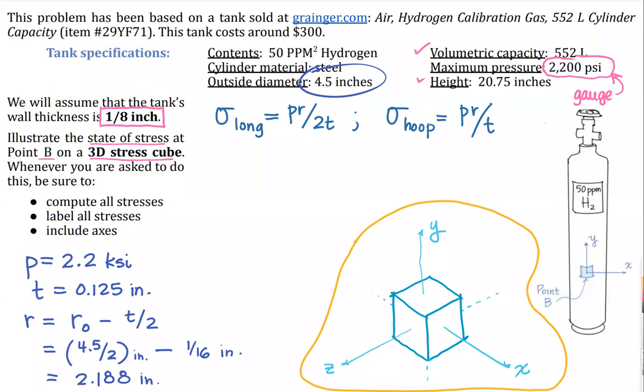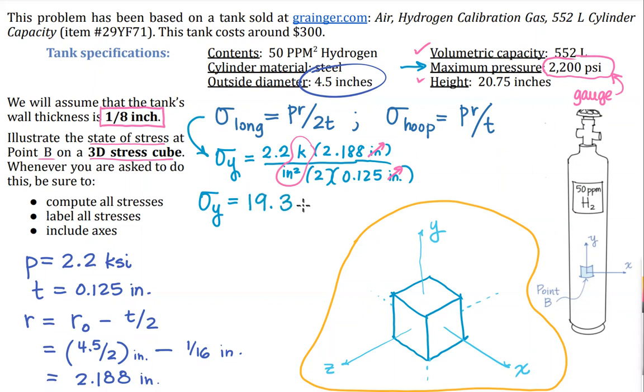What I'm going to do in this next step is plug into my longitudinal stress. Note here that my longitudinal axis is the y axis, so I'm actually calculating a stress in the y direction. I'll plug and chug through this: 2.2 kips per inches squared, that is the design pressure or the maximum pressure the tank is rated for. My mid-depth radius 2.188 inches. In the denominator I have the number two and my 0.125 inch wall thickness. I can multiply all that out. We're watching units. This one cancels with this.